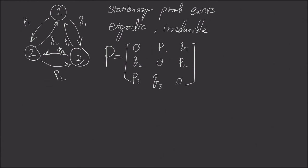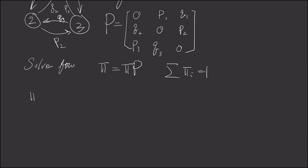If we solve for the stationary distribution, which is π equals π times P, and the sum of π is 1, we'll get the following solution, which is π equals (1 minus P2Q3) divided by a number C, which I'll define in a moment.